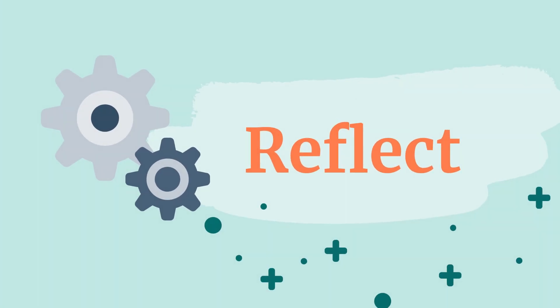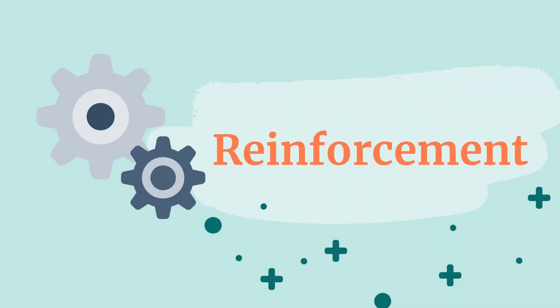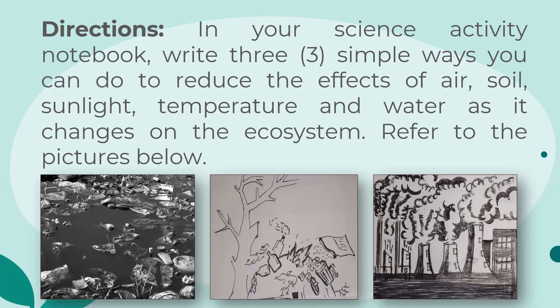Congratulations on finishing the previous activities. Let us now reflect on our learnings by completing the following sentence prompts. Reinforce your learning by answering this last activity. In your science activity notebook, write 3 simple ways you can do to reduce the effects of air, soil, sunlight, temperature, and water as they change on the ecosystem. Refer to the pictures below.